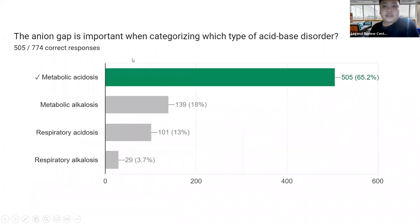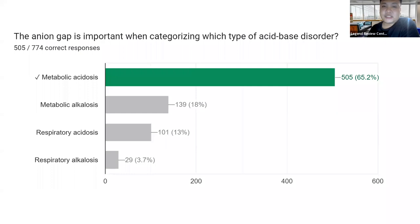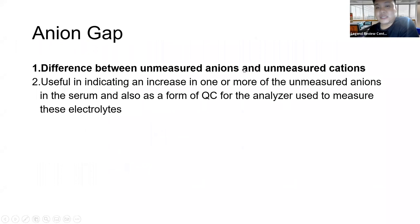Next: the anion gap is important when categorizing which type of acid-base disorder? 65% of students answered correctly — the answer is metabolic acidosis. The anion gap represents the difference between unmeasured anions and unmeasured cations. This is one question in the board — remember the definition of anion gap: unmeasured anions minus unmeasured cations, in that exact order.